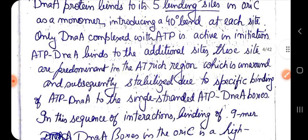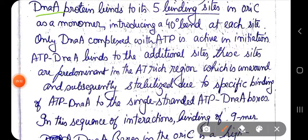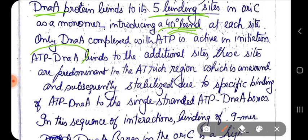When DnaA protein binds to the 9-mer region in the oriC as a monomer, it causes a 40% bend at each site. Only when DnaA is complexed with ATP does it become active in initiation. The ATP-DnaA complex then binds to additional sites — sites predominant in the AT-rich region — which are then unwound and stabilized by specific binding of ATP-DnaA to the single-stranded DnaA boxes.